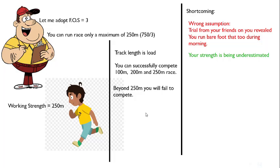So our assumption can be wrong. Next: your strength is being underestimated. When I made some trials I found you can run 750 meters, but I have given you a working strength of only 250 meters and you are not allowed to run beyond that. The same thing is possible with concrete — if you are working with the working stress method, the actual strength of the concrete is going to get underestimated.